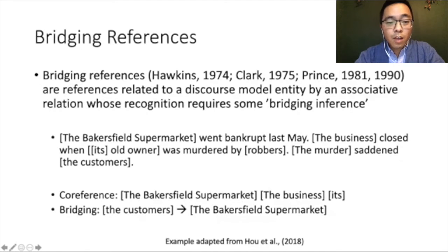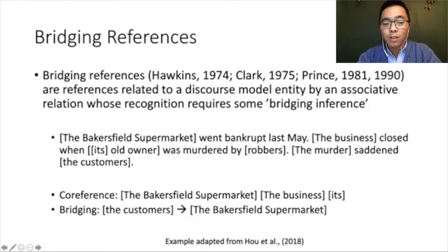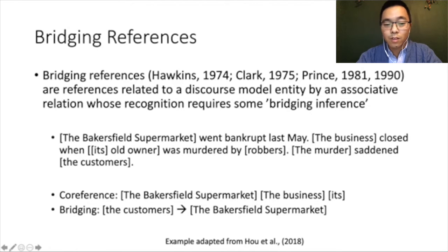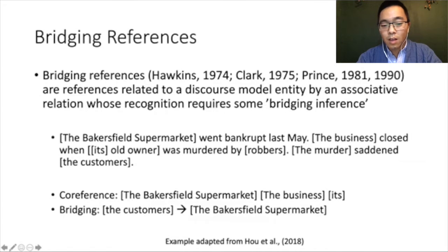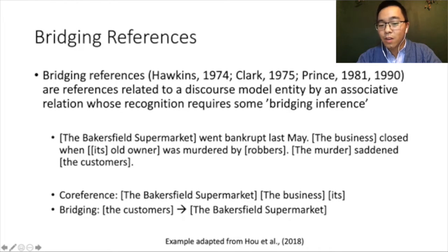Let's first take a look at what is a bridging reference. A bridging reference deals with associative relationships between mentions, instead of the identity relationships normally dealt with in co-reference. For example, we can find co-reference links for 'the Bakesfield Supermarket,' 'the business,' and 'it.' For bridging, we have 'the customer,' which is the customer of the Bakesfield Supermarket.